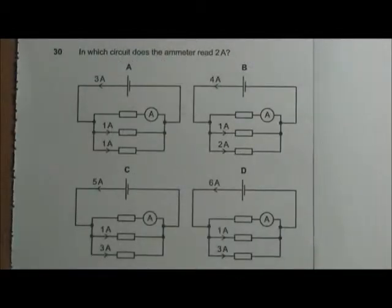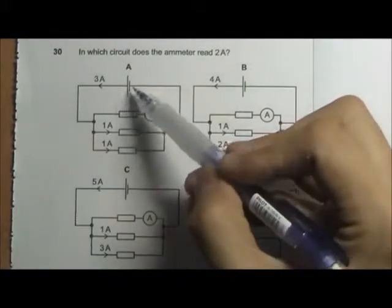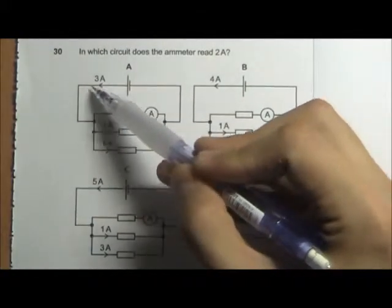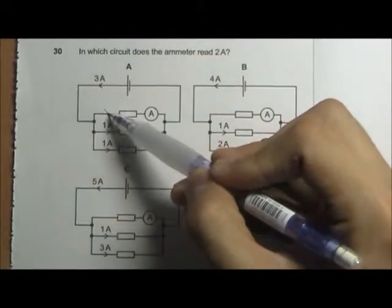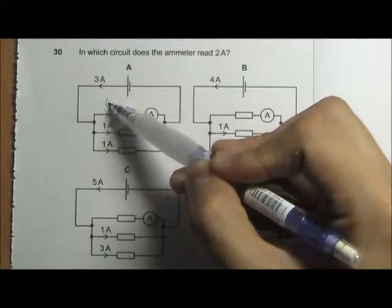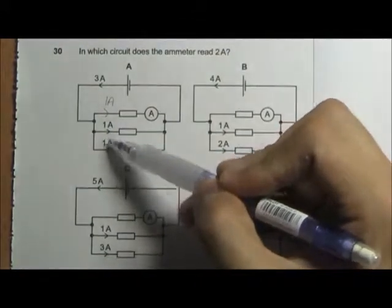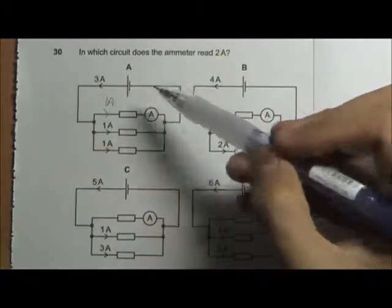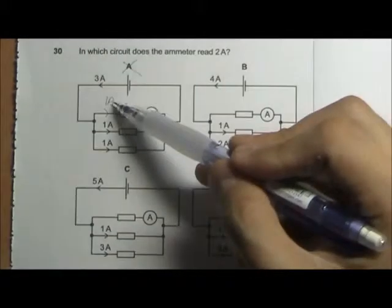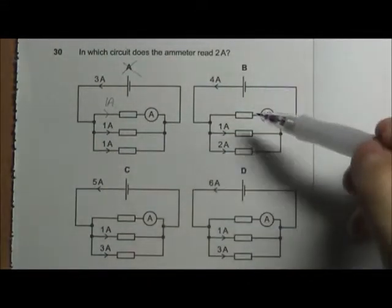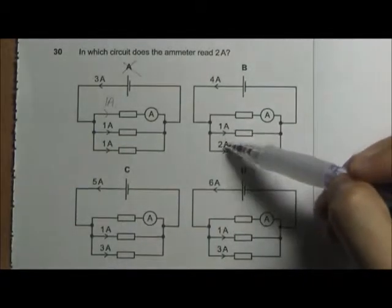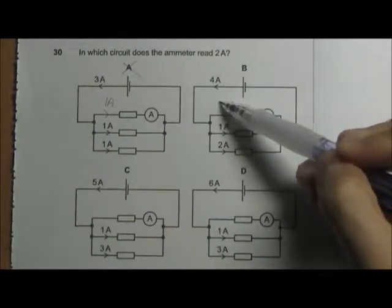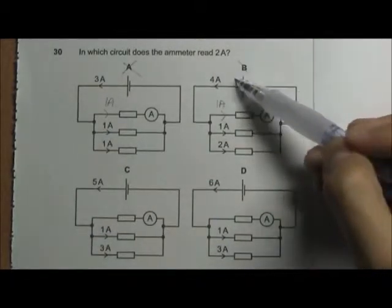For this question, we can work out the current passing through the ammeter. The total current in A is 3 amperes, and then it's split up into 1 ampere, 1 ampere. So the first branch must be 1 ampere as well, so that all the current adds up to 3 amperes. So A is wrong because the ammeter will register 1 ampere. For option B, total current is 4 amperes. This is 1 ampere, this is 2 amperes. So this current here will be 1 ampere. So B is wrong as well.